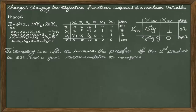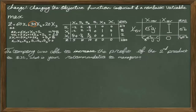Assume the company was able to increase the profit of the second product to $32. What is the recommendation to the manager — do you suggest changing the production plan or sticking with the same one? X2 is the second product. Currently the profit associated with X2 is 30. If we change the profit from 30 to 32, we want to see whether it will change the production of X2, X1, or X3, or whether the production plan stays the same. This is important because X2 right now is not being produced — it's a non-basic variable with production equal to zero.